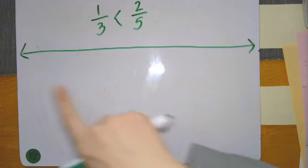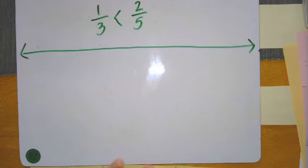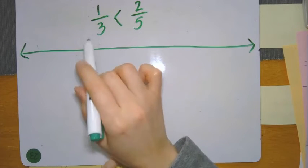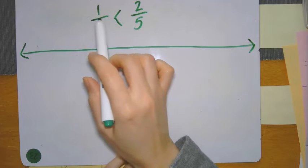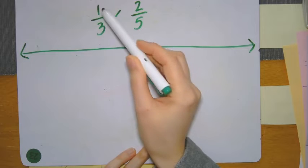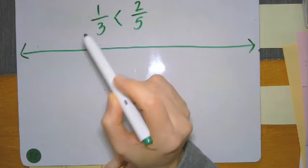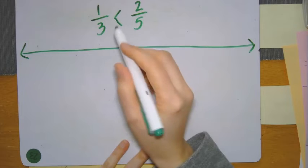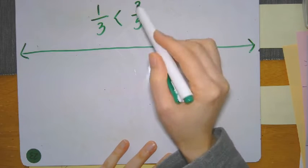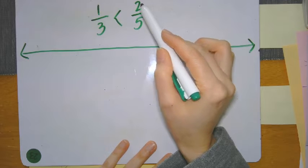One thing you can do is put down on your number line where those thirds and fifths are, and just visually see which one compares to which one. Because one-third is less than one whole — I know that because one whole would be three-thirds. When your numerator and your denominator are the same number, that equals one whole. Same thing with two-fifths: it's less than one whole because one whole would be five-fifths.